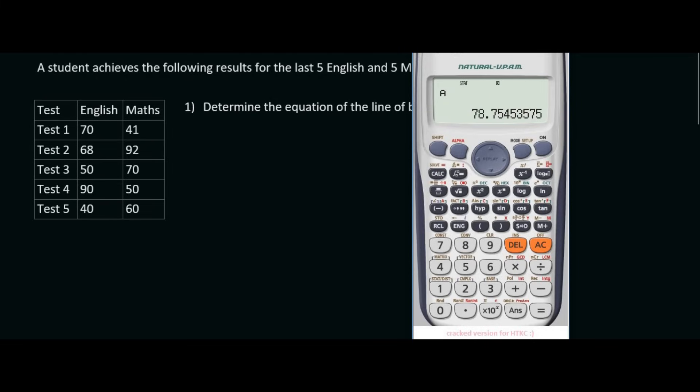So a is going to be equal to 78.75 and then your b value you get by just going shift stat again. You don't have to redo everything and then you get your b value. Oh, now you might think your b value is 78.75 but remember you must push equals. There we go. And so you get negative 0.254.